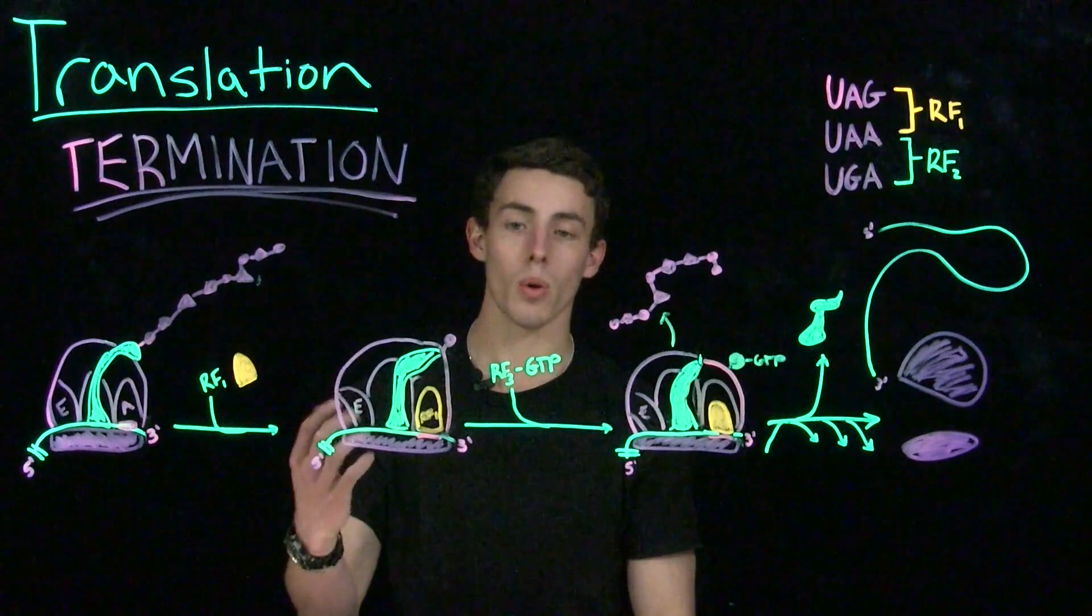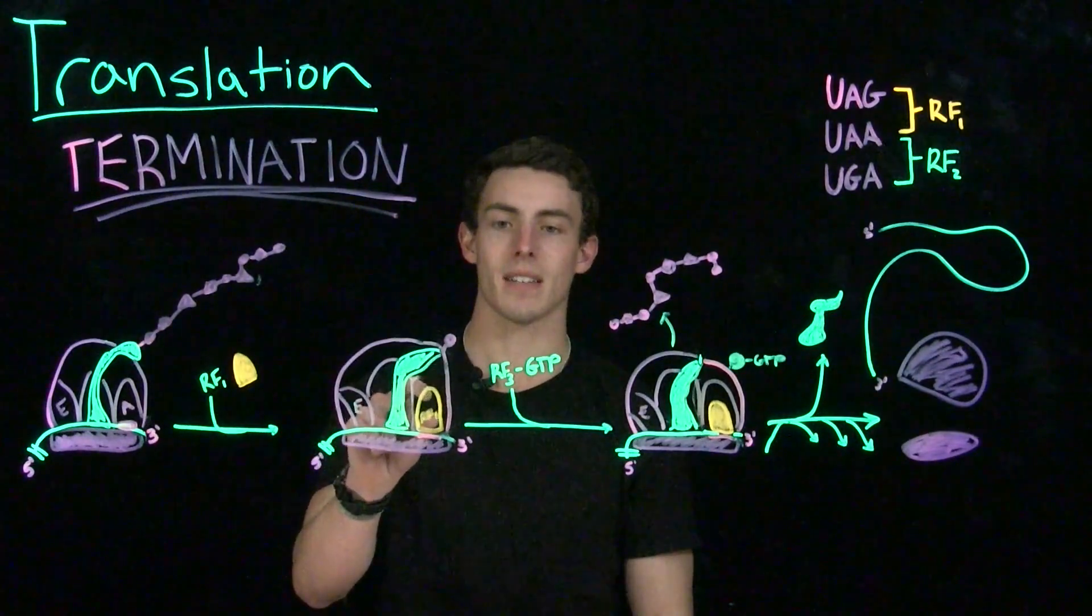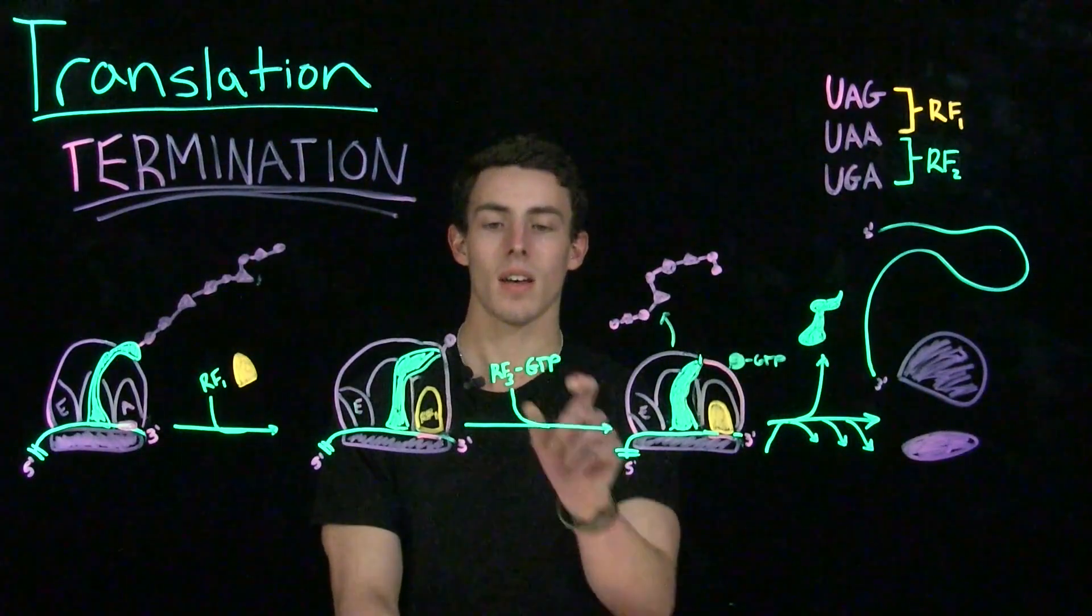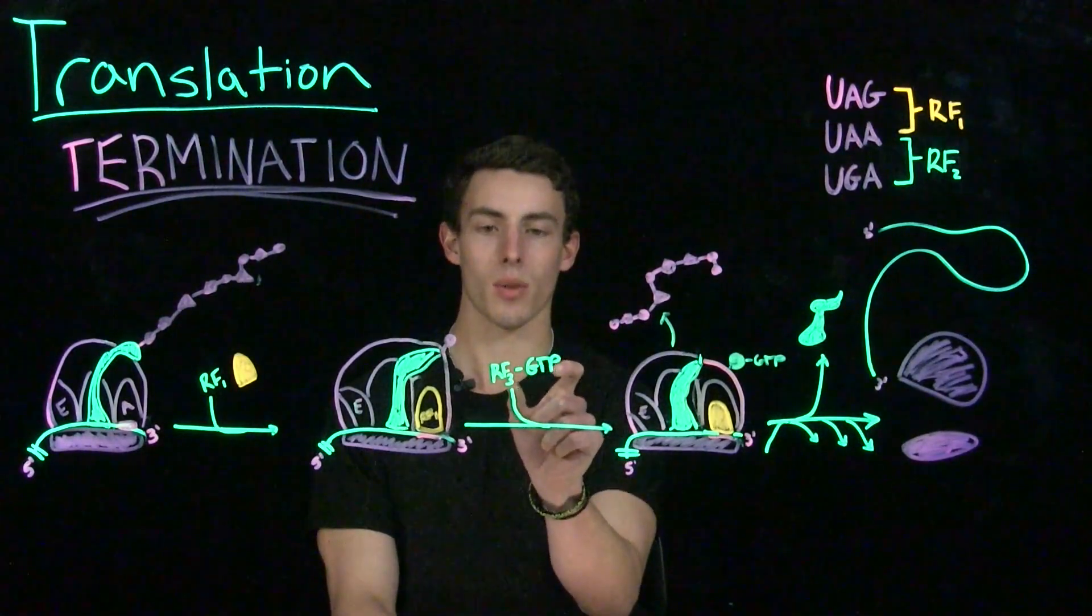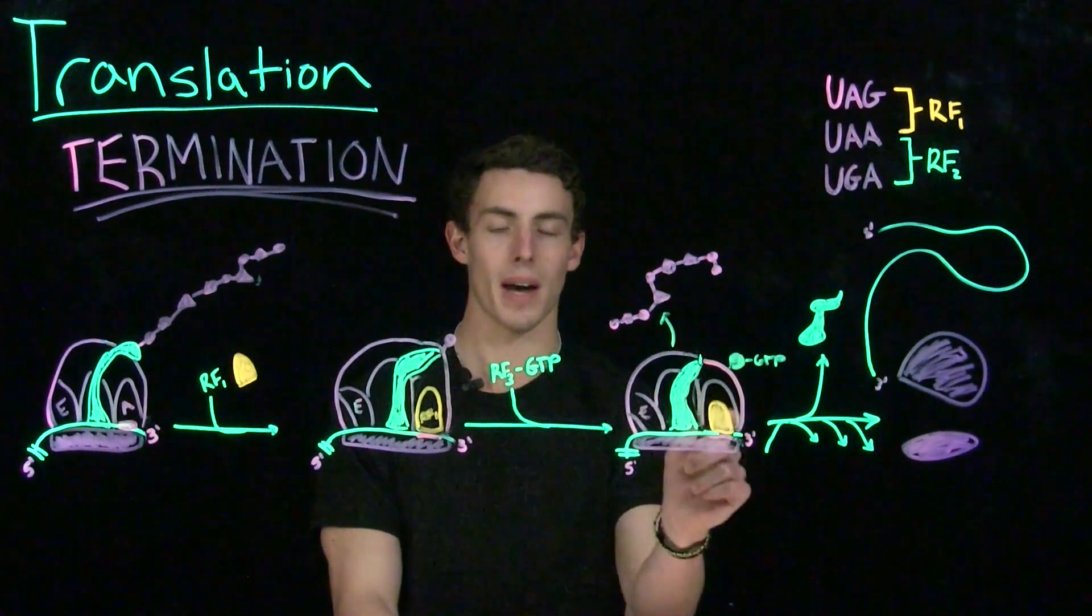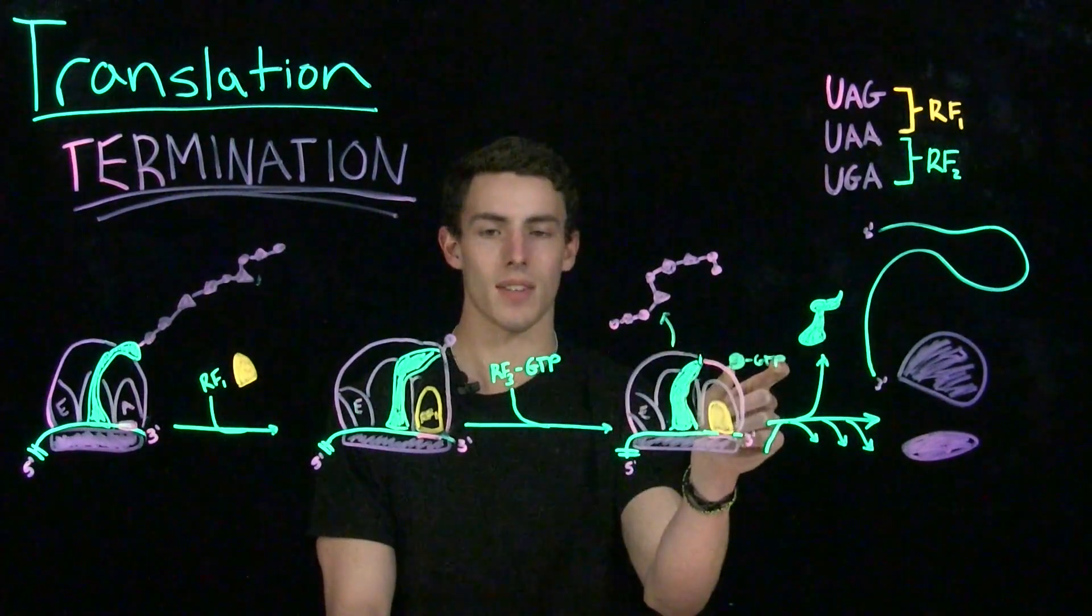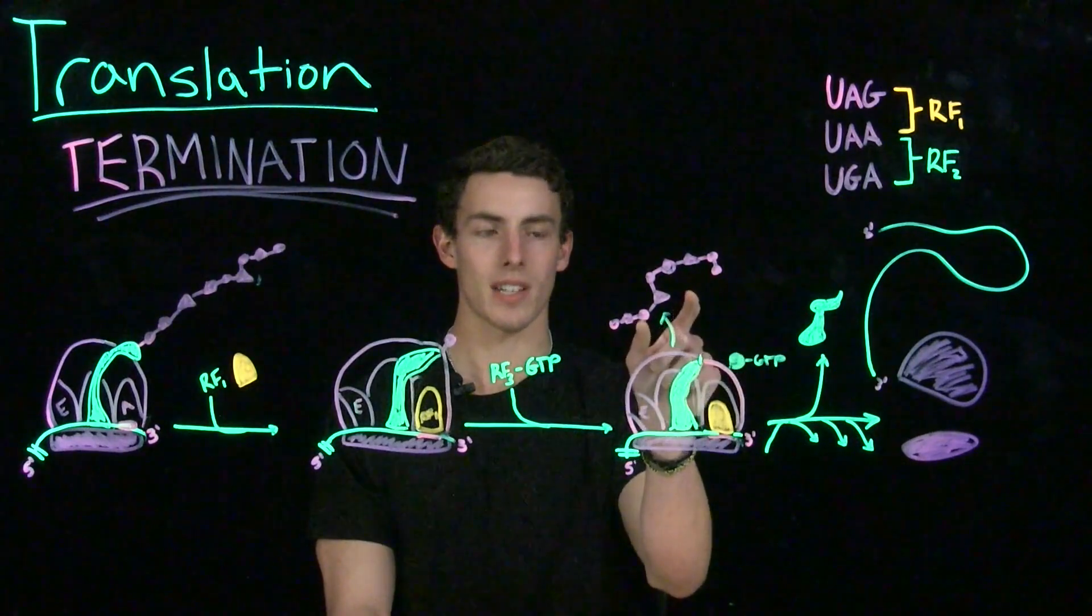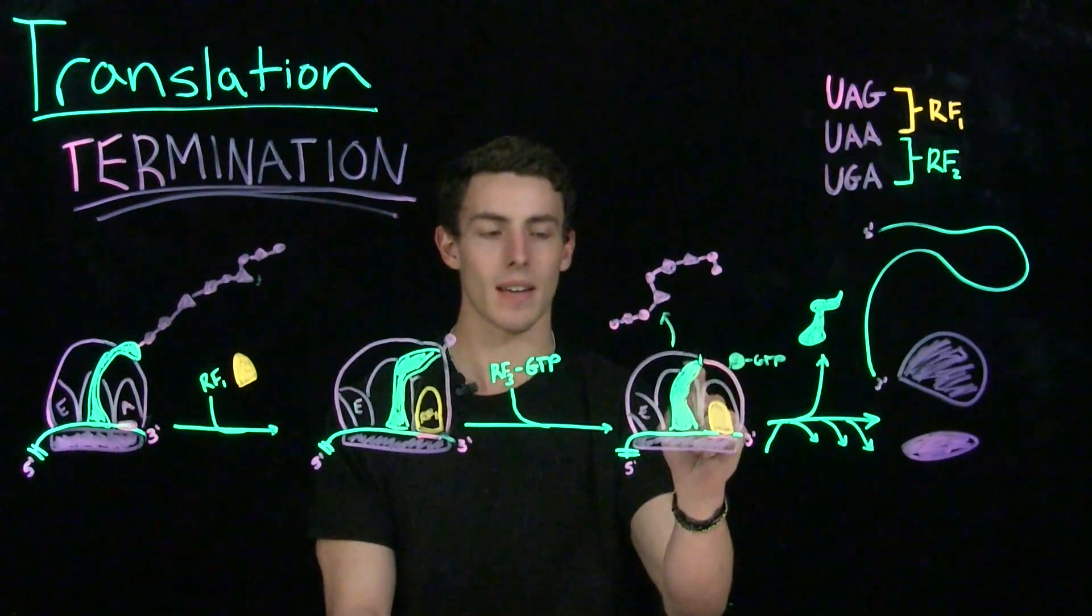So RF1 or RF2 is going to bind in the A site. After RF1 or RF2 binds in the A site, another release factor called RF3, which is bound to GTP, is going to bind. So RF3 is going to bind to the 70S ribosome, and when it binds to the 70S ribosome, our polypeptide chain is going to be freed from the tRNA in the P site.